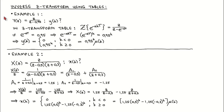We now turn our attention to the inverse Z-Transform, where we are given the Z-Transform of a signal and want to determine the corresponding time domain signal. We consider several approaches illustrated using examples. On this page, we write the Z-Transform in such a form that we can use the Z-Transform tables to find the corresponding time domain signal. In the first example, we consider the Z-Transform Z divided by Z minus 0.95 and wish to find the time domain signal Y of K.